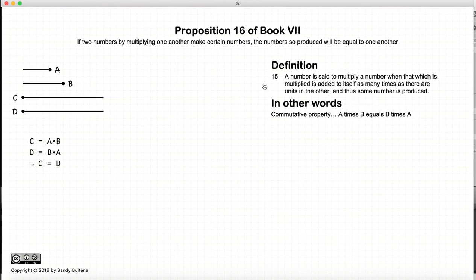Now, in this proposition, first off, the definition of what it means to multiply one number by another. I'm just going to read it straight to you. A number is said to multiply a number when that which is multiplied is added to itself as many times as there are units in the other, and thus some number is produced.